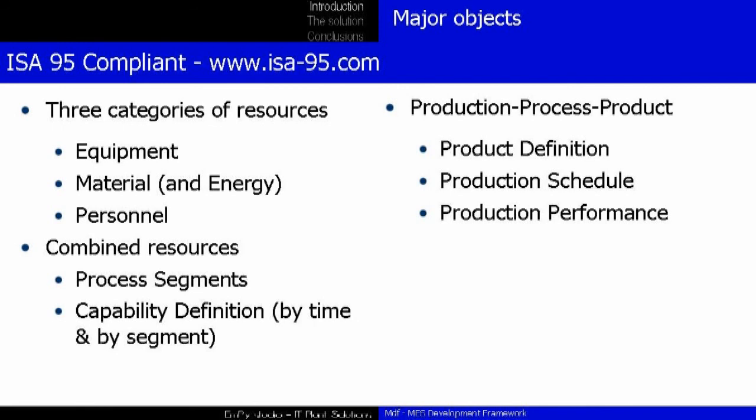Models help us make sense of the world's complexity. In this slide we can see the main models: equipment model, material model, and personnel model. These three models are called the resources model. The combined resources are modeled by the process segment model, process segment capability model, and production capability model. There are at least three models for the production process or product: product definition model, production schedule model, and production performance model. For further information, visit www.isa-95.com — with a free subscription you can download extensive documentation about this standard.